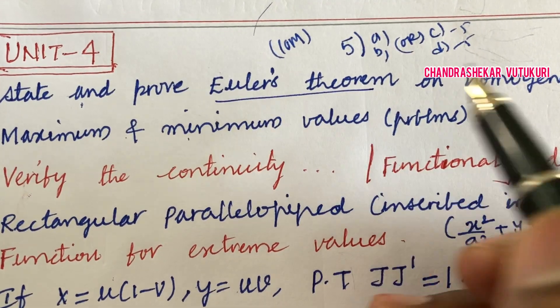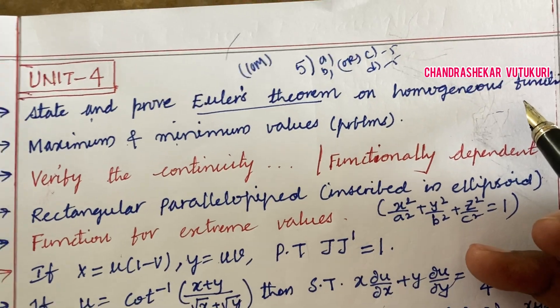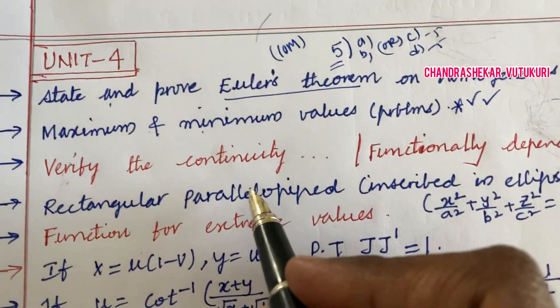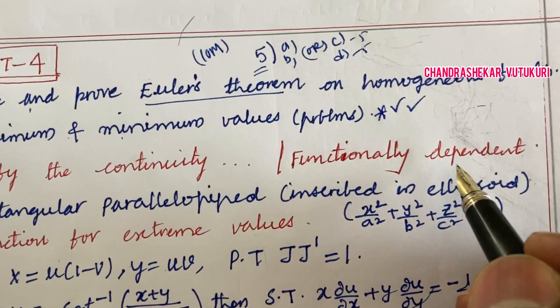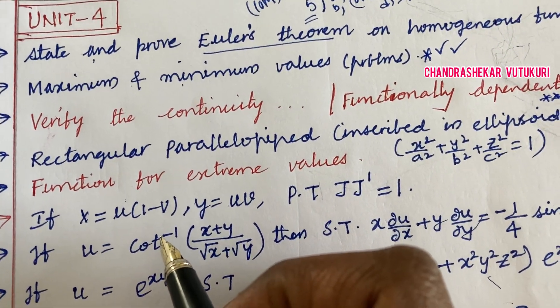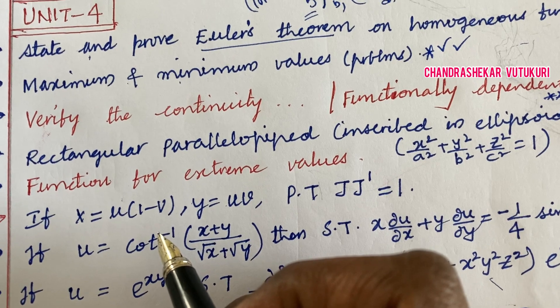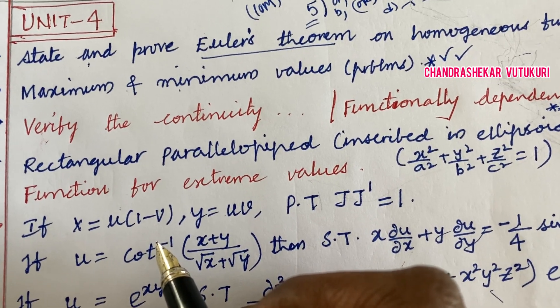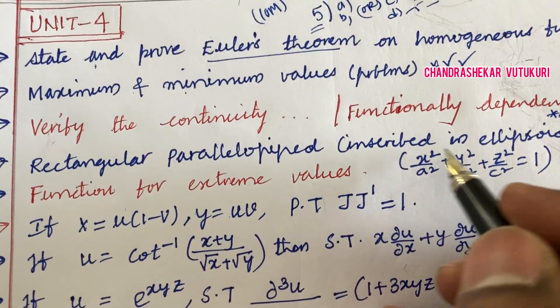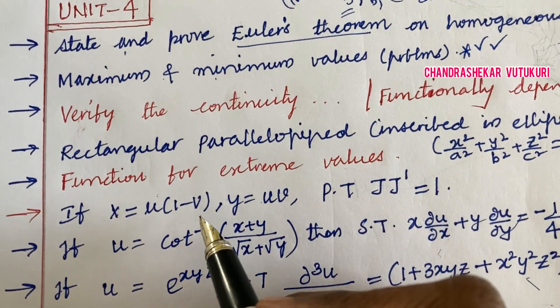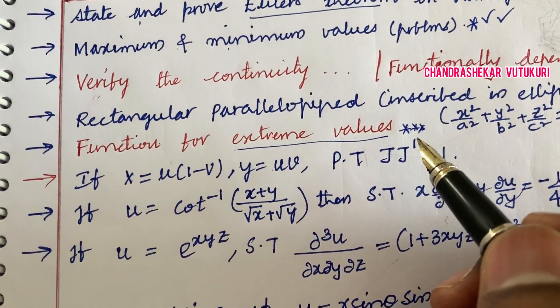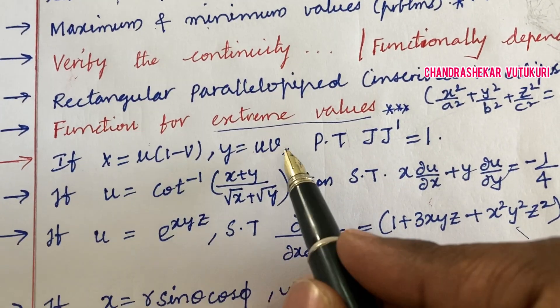State and prove Euler's theorem, which is the topmost question on homogeneous functions and related problems. Maxima and minima value problems are also one of the topmost questions in 5AB. Verify the continuity of the given relation and functionally dependent statement-related problems are also short questions in C or D. You are supposed to work out the complete unit. Rectangular parallelepiped inscribed in an ellipsoid—such a statement for extreme values is also a 5-mark question in 5AB or CD.